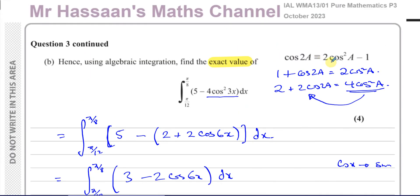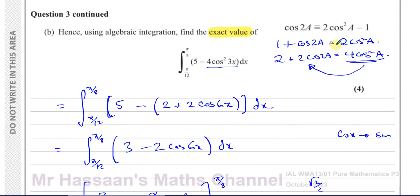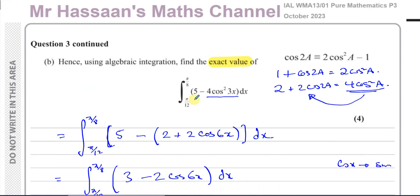So we used the identity proved in Part A to rewrite the cosine squared term into a form without a square, making it integrable. That's the answer to question 3. Other questions from this paper can be found in the playlist at the end of the video, and questions on trig identities from P3 can be found in the other playlist. Subscribe by clicking the link, and the index video will help you access all my material more easily. Thank you for watching and see you soon.